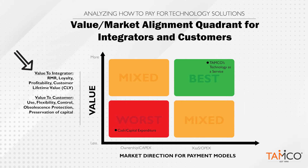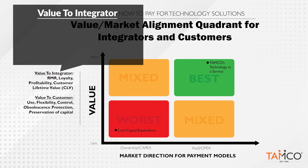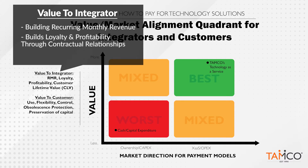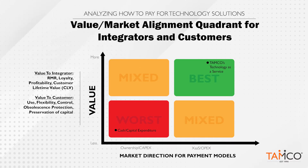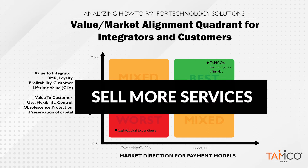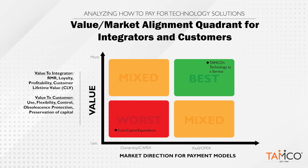Let's first look at the integrator and what's most important to them. Building recurring revenue is the number one priority — RMR, recurring monthly revenue. That builds loyalty and profitability through contractual relationships and therefore builds customer lifetime value. Integrators are really trying to flip the script, change the culture to sell more services rather than equipment, lead with that, pull through equipment, but be more service-oriented in their offering and design.